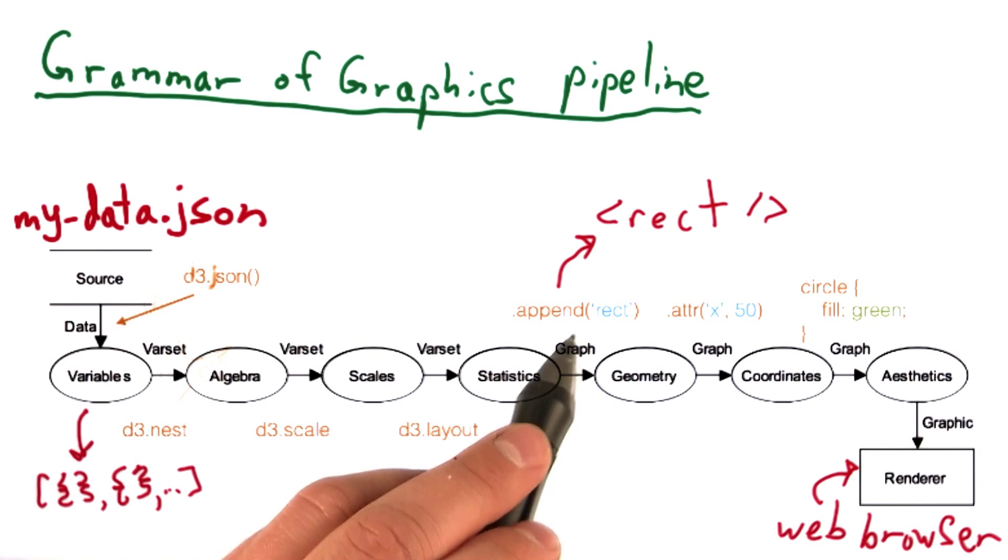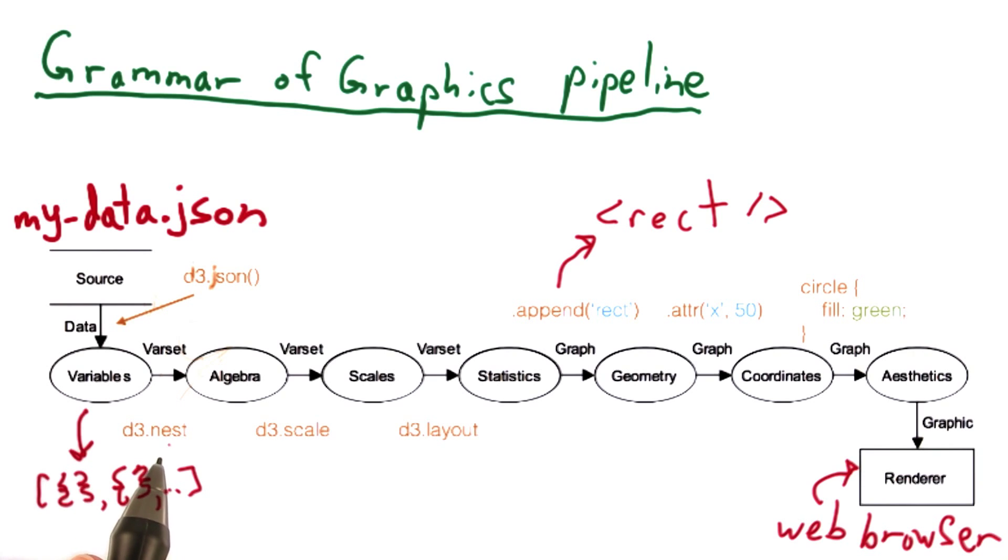But I did want to cover some of the more common D3 functionality and how it relates to the grammar of graphics. In this pipeline, once we have our JavaScript array of object literals, nest is a function that simply groups our data. D3.scale transforms a continuous or categorical variable into something that a web page can display, such as a pixel value or a color.